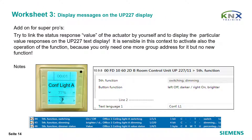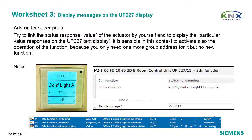Display messages on the UP227 display — add-on for super pros. Try to link the status response value of the actuator by yourself and display the particular value responses on the UP227 text display. It is sensible in this context to activate also the operation of the function, because you only need one more group address but no new function. To get a display indication of the dimming level, the dimming value status of the actuator is required. You prepared it previously in the actuator parameters — now create the new group address and link it accordingly.